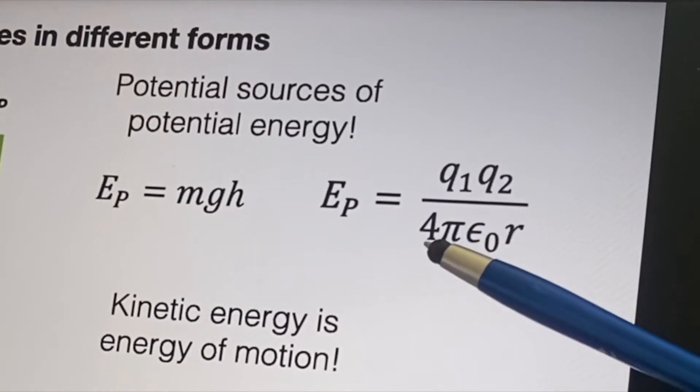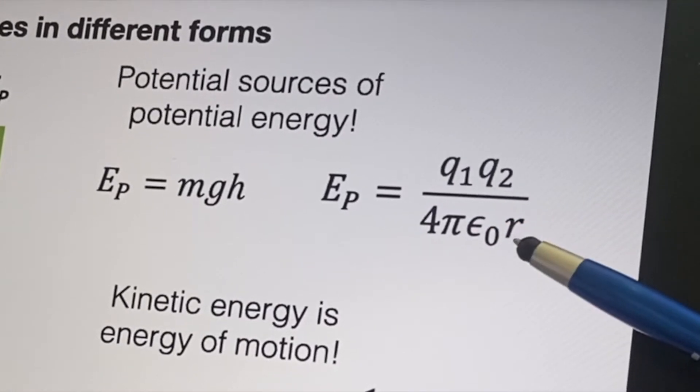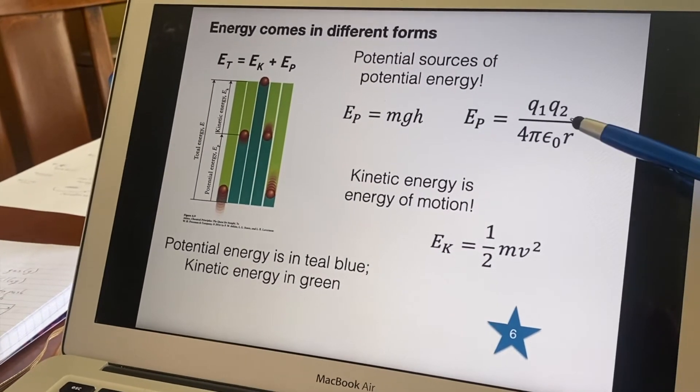And then you see some other strange stuff in here - the four and the pi and the epsilon naught - and you're like well what are those all about? We have a six down here so we'll get to it.